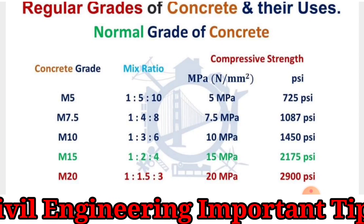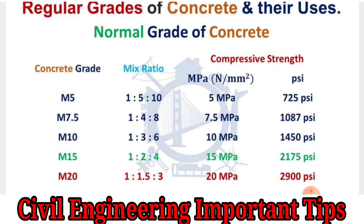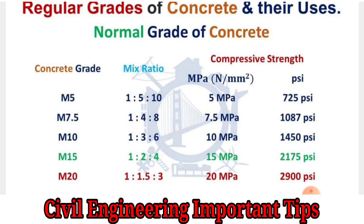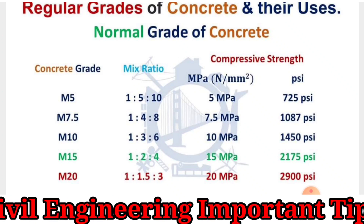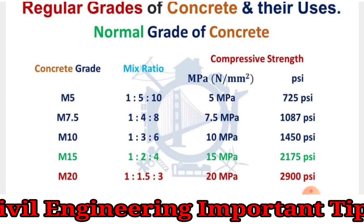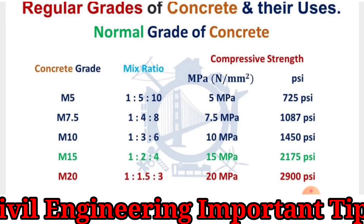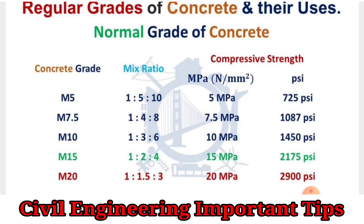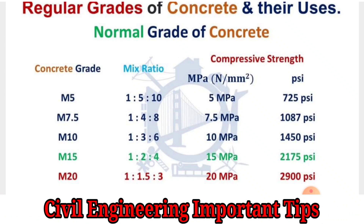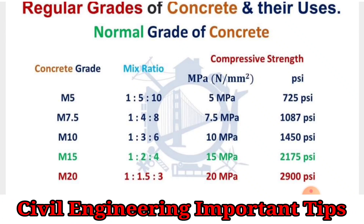The PSI for M7.5 is 1087 PSI. For M10 grade of concrete, the ratio is 1:3:6 Cement Sand Aggregate, and its compressive strength is 10 MPa.